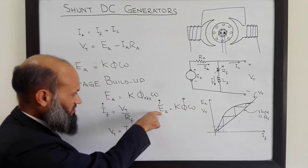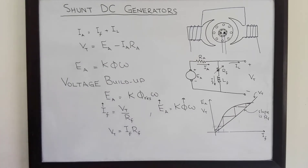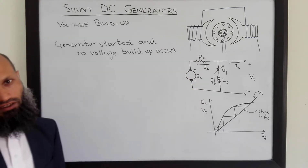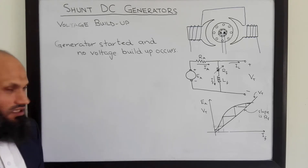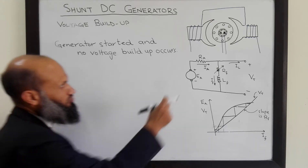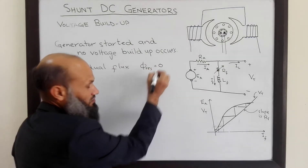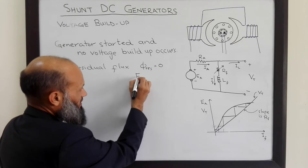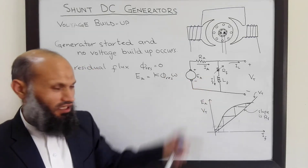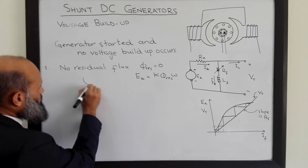Sometimes when we start the generator — that is, when we start rotating the rotor — no voltage buildup occurs. The first possible reason is that there may be no residual flux in the poles of the generator (φ_residual = 0). In that case, there is no voltage, no current, and hence no voltage buildup can occur.